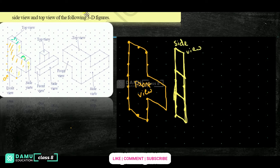Then the top view will be — how it is, this is also the top view. So 1, 2, 3, 4 — here it is joining like that. So from 1, here 2. Like this, then from here it is 2 cm. So this is the top view.